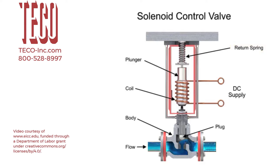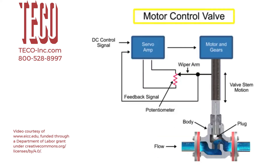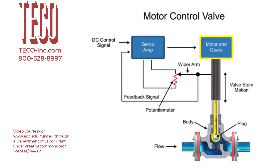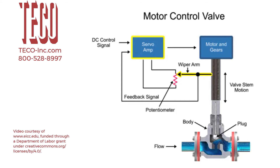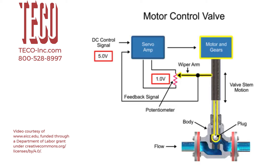Another method for variable valve positioning uses a motor and is referred to as proportional control mode. Using a gear motor attached to the valve stem, a servo amplifier provides a DC control signal that moves the valve to the desired position. Feedback is achieved with a wiper arm attached to the valve stem that sends a signal back to the servo amplifier where the position is monitored. The servo amplifier drives the motor until the control signal is equal to the feedback signal.